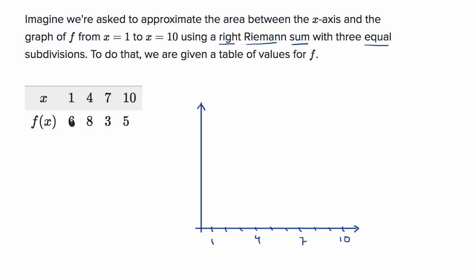They tell us that when x is one, f is six; then we go to eight at x equals four. Let me mark off the y-axis up to eight. So when x equals one, f of one is six — that's the point (1, 6). Then we have the point (4, 8), then (7, 3) on our graph, and then (10, 5). That's all we know about the function.